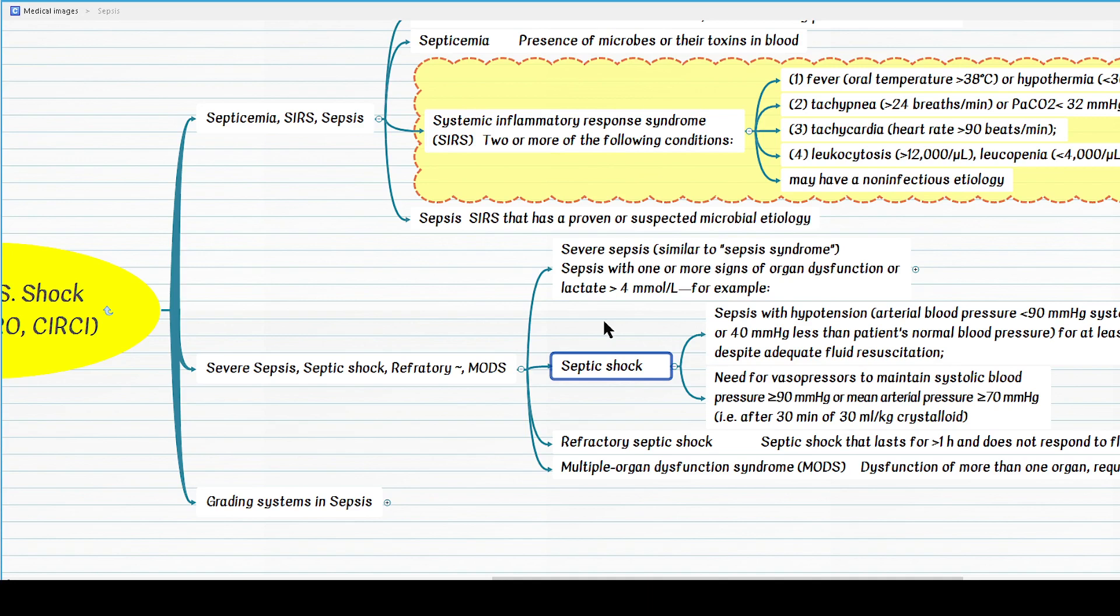Now to make things even more complicated, how do we differentiate refractory septic shock from just simple septic shock? Refractory septic shock, as the name indicates, is the one that fails to respond to adequate fluid therapy or pressors for more than one hour. Put it simple, if a patient is in septic shock and the condition lasts more than one hour for any reason, or if the patient in septic shock fails to respond to pressors, that's the definition of refractory septic shock.